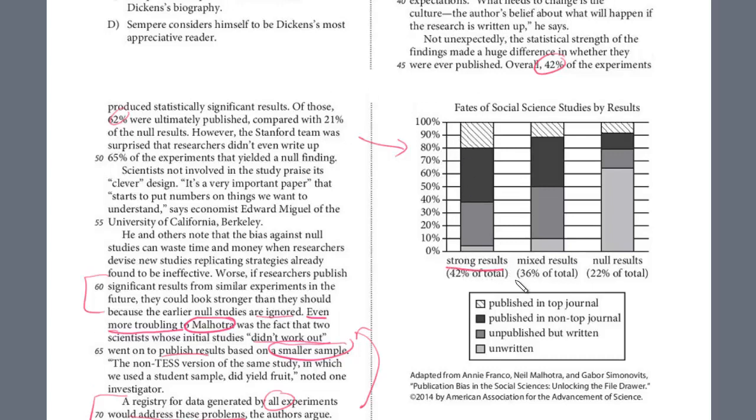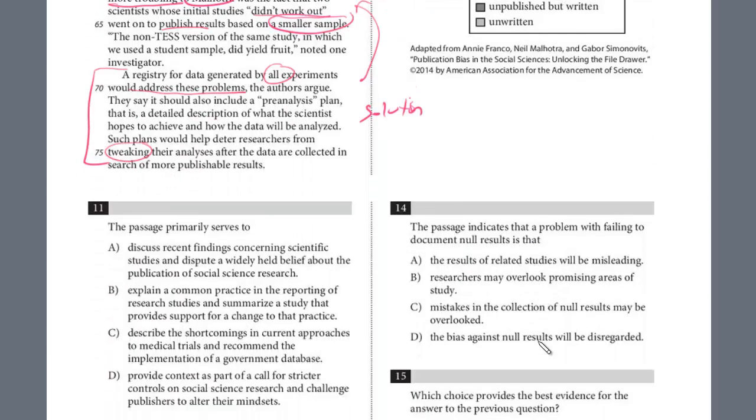And so that is this first bar. And if we look, so we have this published in the top journal, published in the non-top journal, unpublished but unwritten, and unwritten. So I'm going to kind of go back and forth here, but it looks to be, so it looks to be like 60% were at least published in a top journal or a non-journal. And then the bottom 40% weren't published at all. So let's just take a look at the answer choices.